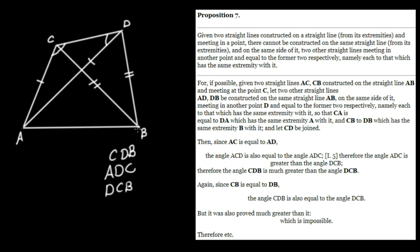But we also have the fact that CB and BD are equal, and once again we use Proposition 5 to conclude that therefore the angle CDB is actually equal to the angle DCB. But why is that absurd? Remember we said CDB is greater than DCB — so we've shown that the greater angle CDB is actually equal to DCB. It's both greater and equal to DCB. But if it's greater it cannot be equal — hence we have the contradiction, and hence this whole construction is absurd. Therefore we must conclude that this construction cannot be done, and therefore this proposition is true.